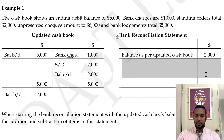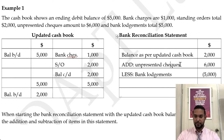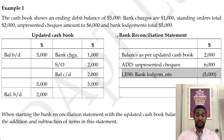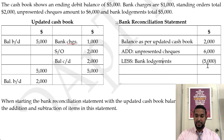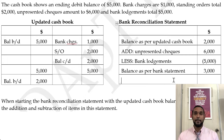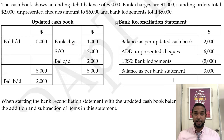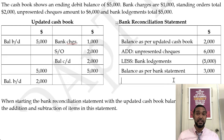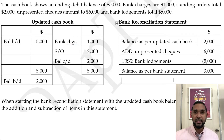So let's see how it looks. Add un-presented checks: $6,000, and less bank lodgements: $5,000. Two plus six is eight, eight minus five gives us $3,000. So here we have determined that our bank statement balance is $3,000 by first updating the cash book and then doing a bank reconciliation statement starting with the updated cash book balance. What we're doing is creating a situation where both statements have the same information.